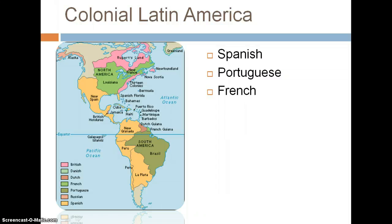When we discuss Latin America, the factor you need to think about is who had control during the colonial period. There were three main players. You have the Spanish, who controlled the western side of South and Central America, stretching all the way from the western U.S. down through Chile, depicted in the burnt yellow color. Secondly, we have the Portuguese colonies, which controlled what is now Brazil and the surrounding area, depicted in the dark green.